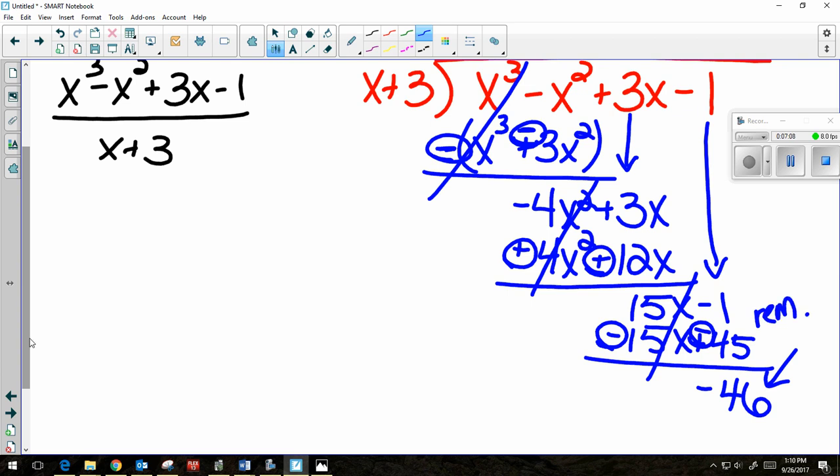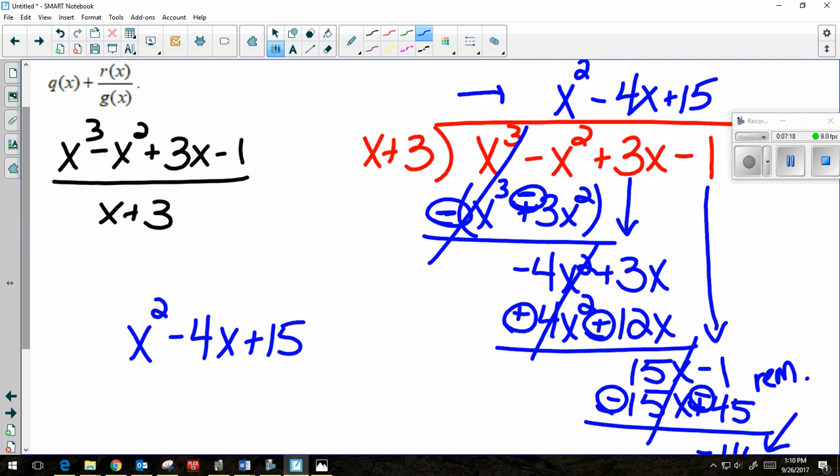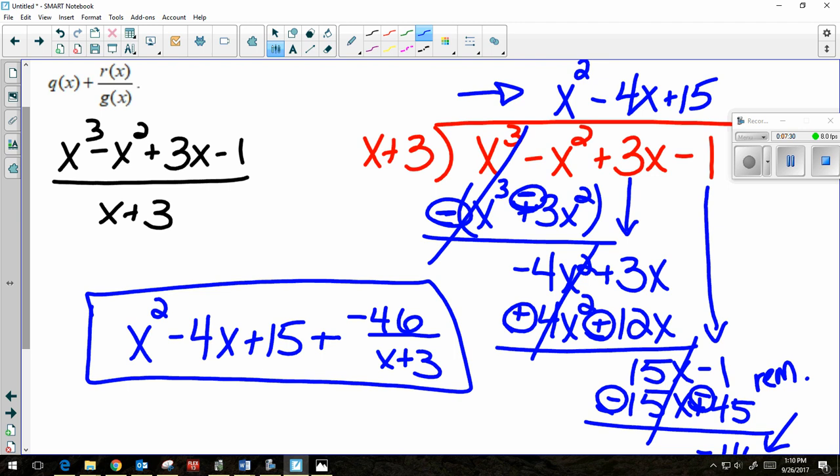This is my remainder. So if I'm putting it in that form, I'm going to have x² - 4x + 15, because that was my quotient from the top up here, plus my remainder. So -46 over my divisor of x + 3, which is the same answer we got when we did it with tabular. So that's how you divide using long division or using tabular when there are remainders.